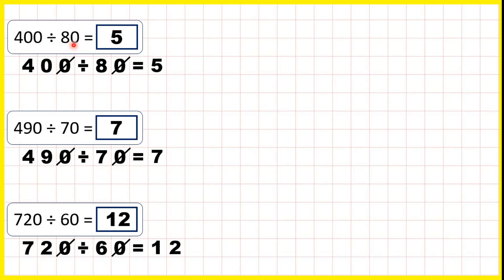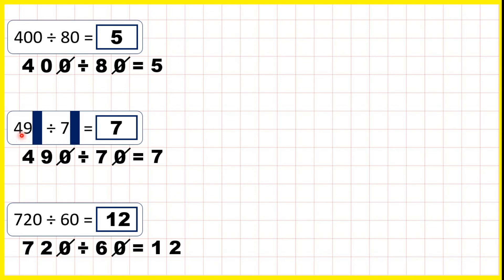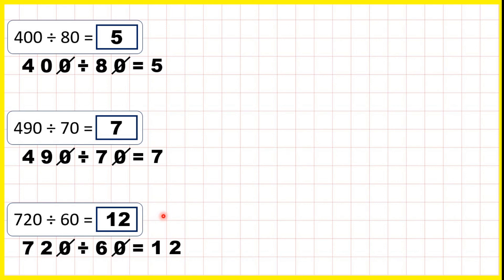So 720 divided by 60 is 12. You can see here: 400 divided by 80 gives the same answer as 40 divided by 8. And 490 divided by 70 gives the same answer as 49 divided by 7. And 720 divided by 60 — you can just do 72 divided by 6, and you'll have your answer.